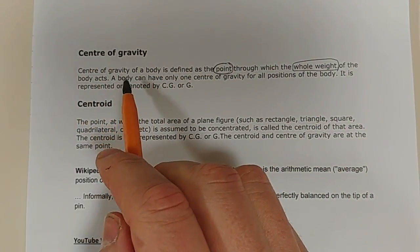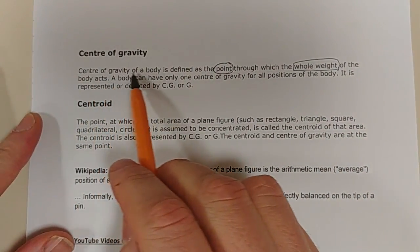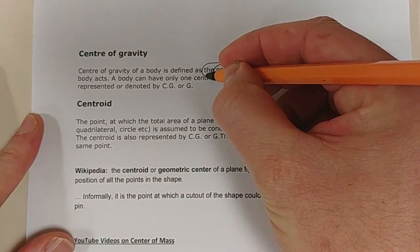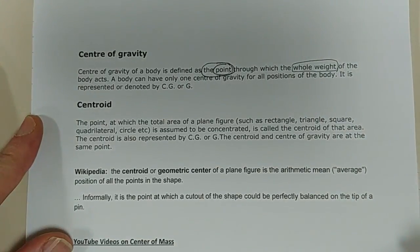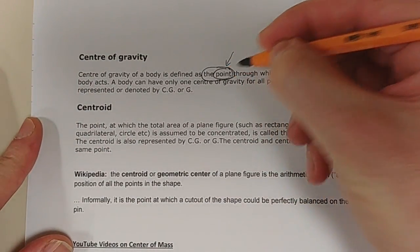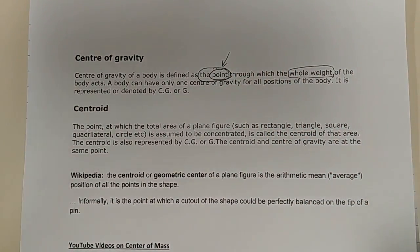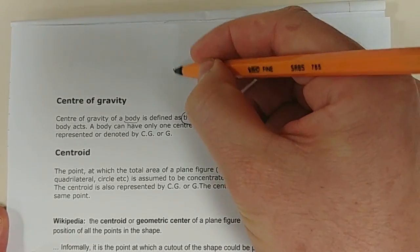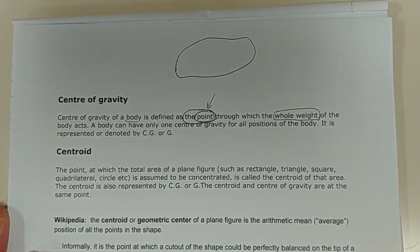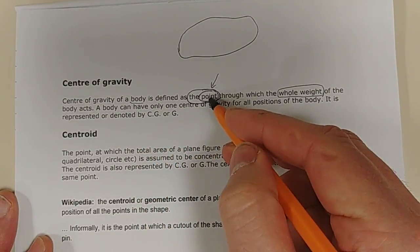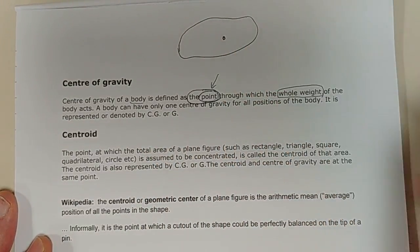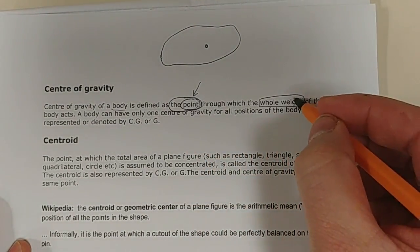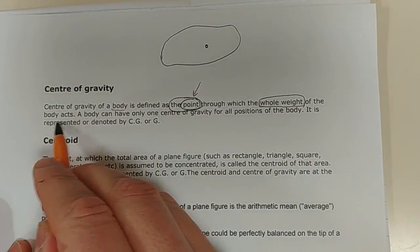The center of gravity of a body is defined as the point — take note, a point — through which the whole weight of the body acts.